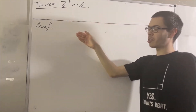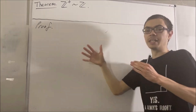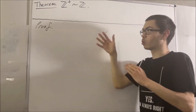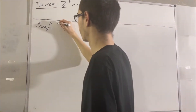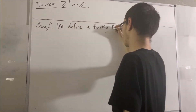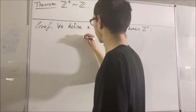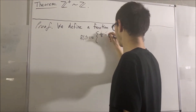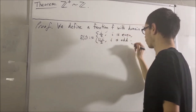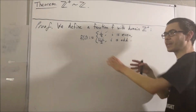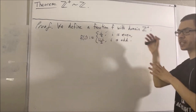To start out the proof, we're going to define a function which we claim gives a one-to-one correspondence between these two sets. Just to give a visualization of what's going on with this function, check this out.